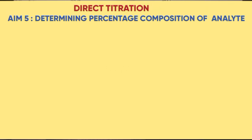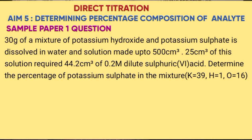Welcome learners. In our lesson today we look at aim number 5 of direct titration, that is determining the percentage composition from the analyte. Example: 30 grams of a mixture of potassium hydroxide and potassium sulphate is dissolved in water and the solution made up to 500 cm³. 25 cm³ of this solution required 4.2 cm³ of 0.2 molar dilute sulphuric acid. Determine the percentage of potassium sulphate in the mixture.